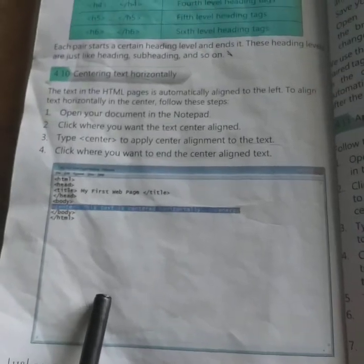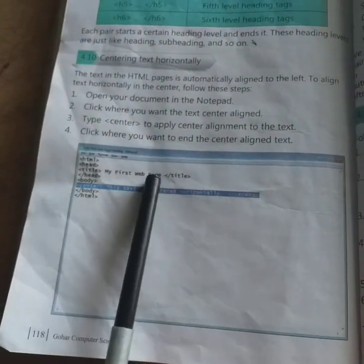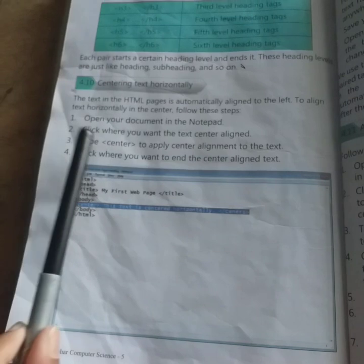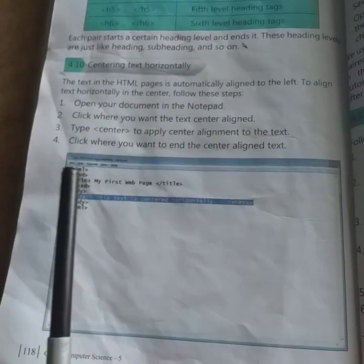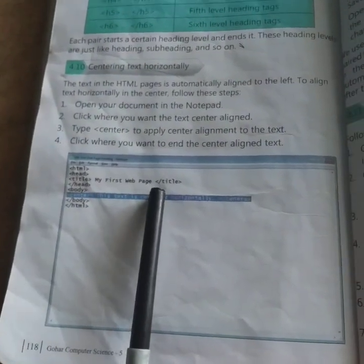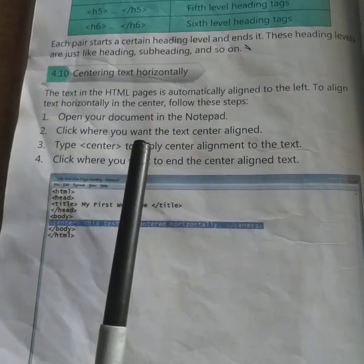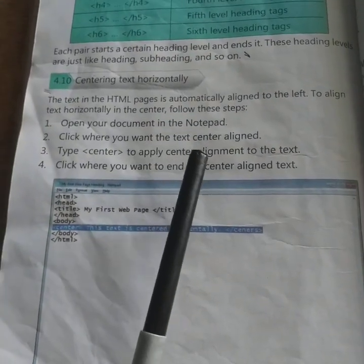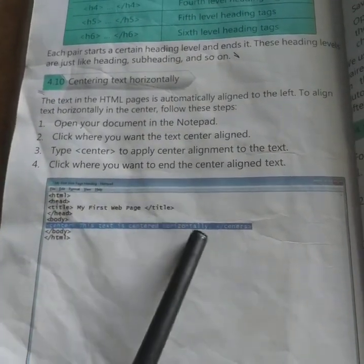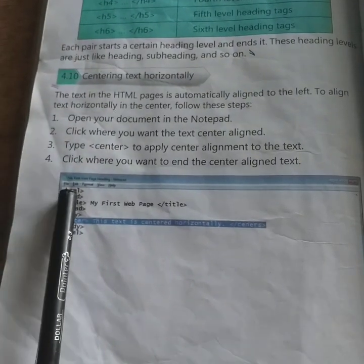जब हम एक document में — चाहे वो HTML हो या कोई भी — उस पर कुछ text type कर रहे होते हैं तो हमेशा text जो है वो left side से type होना शुरू होता है। To align text horizontally in the center, follow these steps.